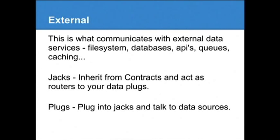The external layer is what communicates with external data services. There are two types: jacks and plugs. Jacks are data routers — a jack can have many plugs plugged right into it. Plugs are the things that actually talk to data sources. If you want to use an ORM, you use it via a plug. If not, you can use something more direct, like the SQL gem or the Moped gem for MongoDB, or write your own direct queries to whatever data source you want. These don't have to be databases — they can be used for queues, caching, external APIs, and so on.